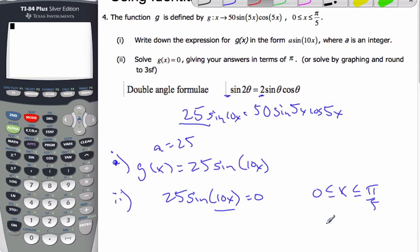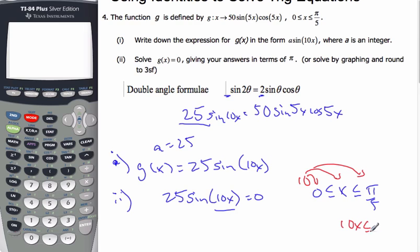Okay. So, let's convert it to 10x. So, put 10x in the middle, because that's our angle. Alright. So, multiply everything by 10. So, 10x. Okay. So, that's got to be bigger than zero. And it's got to be less than two pi.